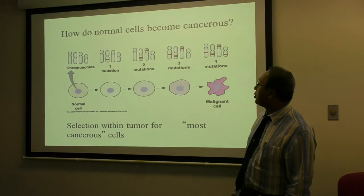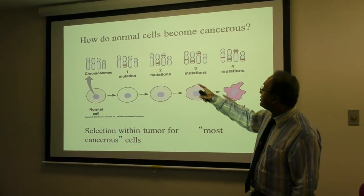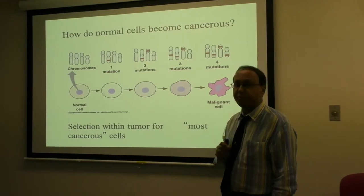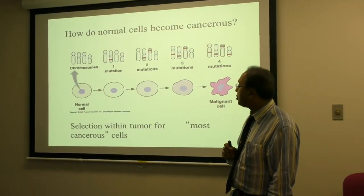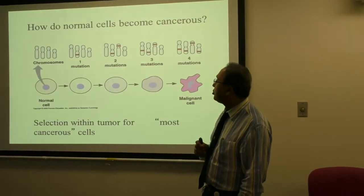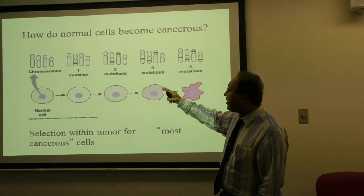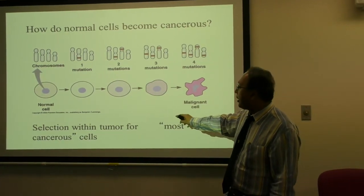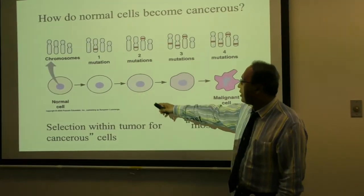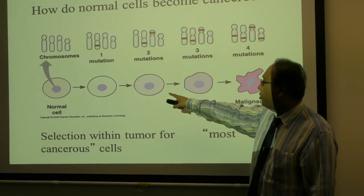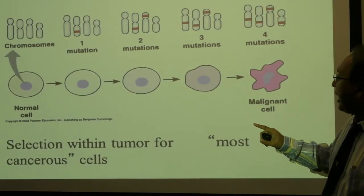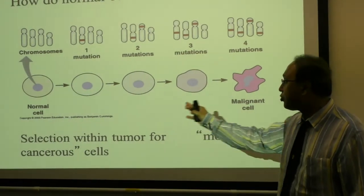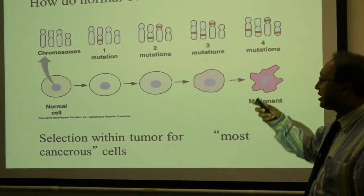How do normal cells become cancerous? The target is the chromosomes in the cancer cell. It is here that the chromosomes have a mutation, and this mutation will go on to other mutations, and eventually there will be a mutation that brings about a malignant cell. Looking at this picture, we could have initially metaplasia, then we have dysplasia, then carcinoma in situ, and then invasive cancer. These are the steps that can happen, and they are all genetically related.